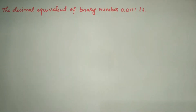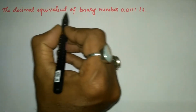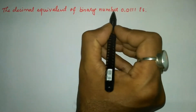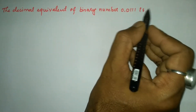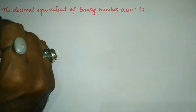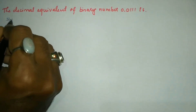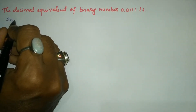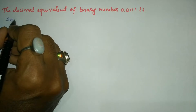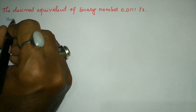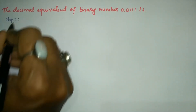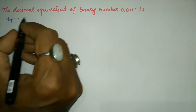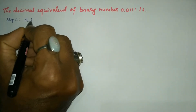Hello and welcome to Vision Academy. In this video we are going to solve the decimal equivalent of binary number 0.0111. In order to convert the given binary fractional number into its decimal equivalent, we have to follow certain steps.